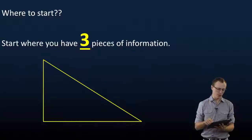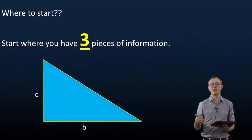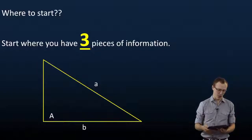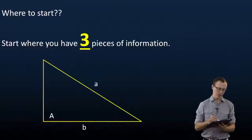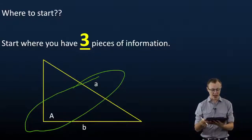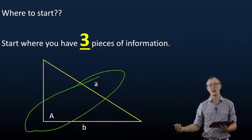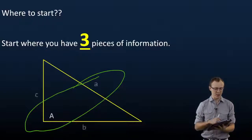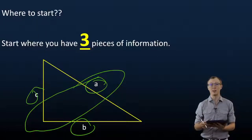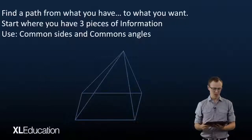So for example, if you have an area and two sides, you can use the area rule in order to find the missing angle. If you have a side angle pair, a couple, and you have another side, you can use the sine rule. And if you have three sides, you can use the cos rule in order to find a missing angle.